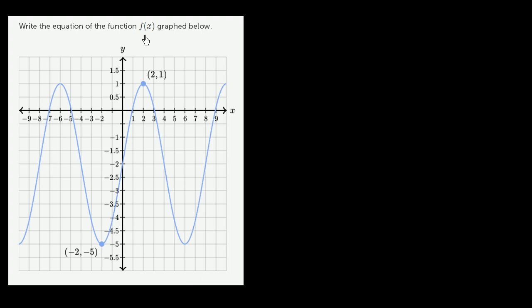Write the equation of the function f(x) graphed below. So we have this clearly periodic function. Immediately you might say, well, this is either going to be a sine function or a cosine function. But its midline and its amplitude are not just the plain vanilla sine or cosine function.